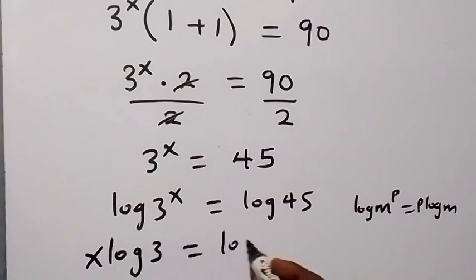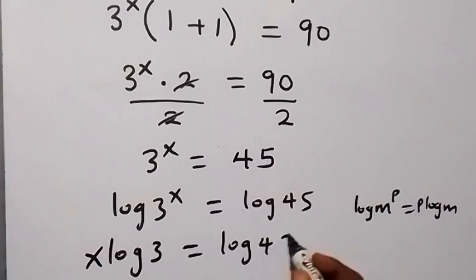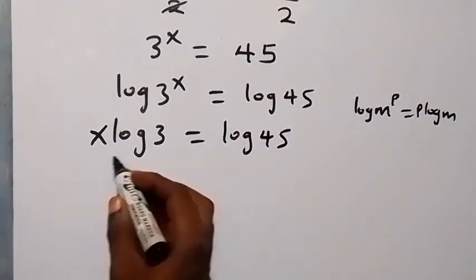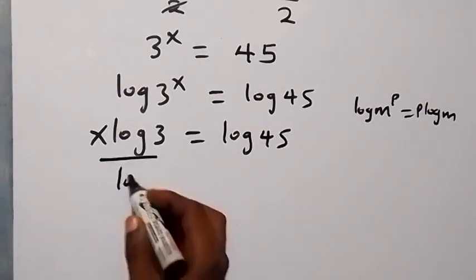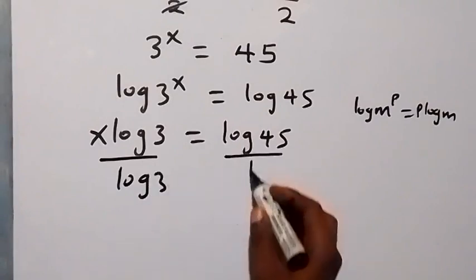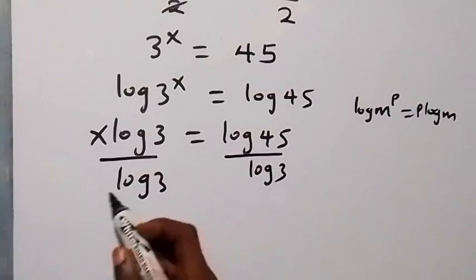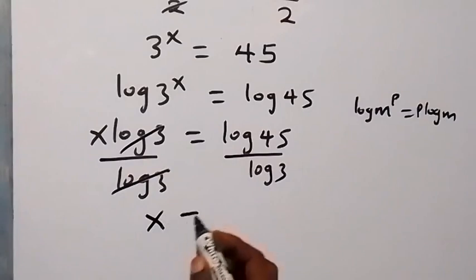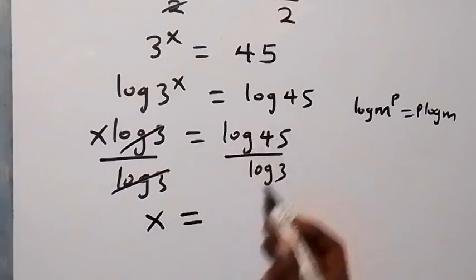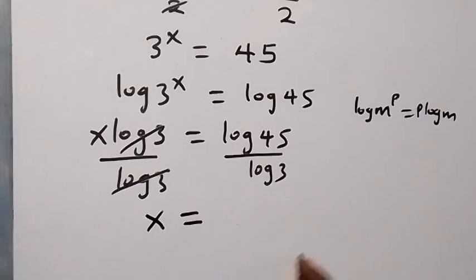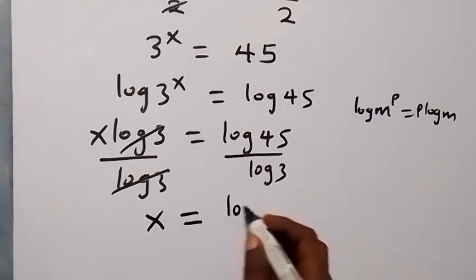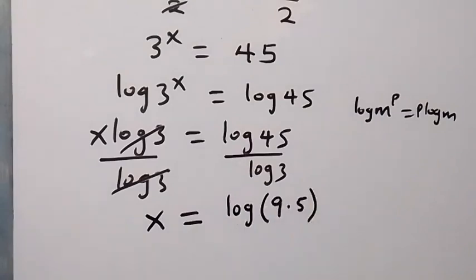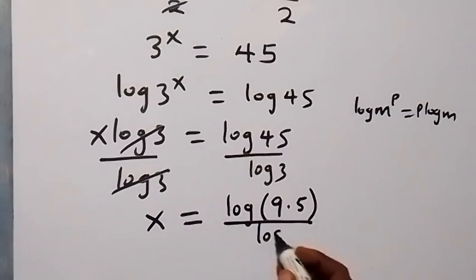In the next step, we divide both sides by log 3. The log 3 terms cancel out, leaving x equals log 45 over log 3. We can separate 45 as 9 times 5, so x equals log(9 × 5) over log 3.